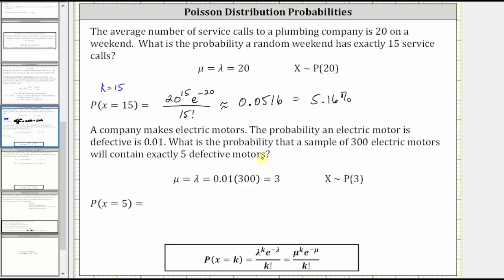And now to find the probability, we need to find the probability x equals five. So going back to the formula, we use mu equals three and k equals five. In the numerator, we have mu to the power of k, which is three to the power of five times e to the power of negative mu, which is e to the power of negative three, all divided by k factorial, which is five factorial.